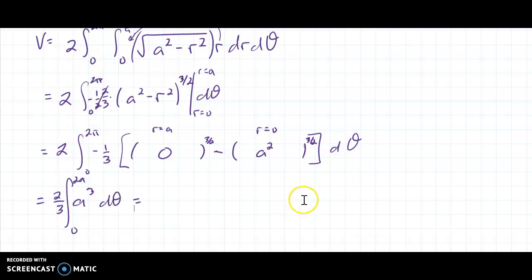And then integrate that from 0 to 2π dθ. Well, that is 2 thirds A cubed times θ. I'll evaluate it from 0 to 2π, which gives me 2 thirds A cubed times 2π. And then I'll get minus 0, but I'm not going to show that. You should be okay with that because we've been doing that a lot lately, which just gives me 4π A cubed over 3.